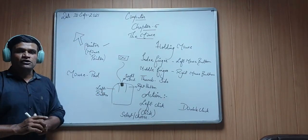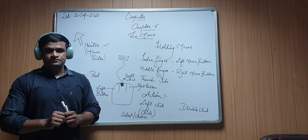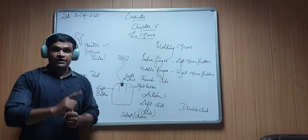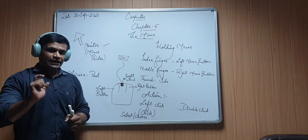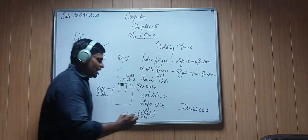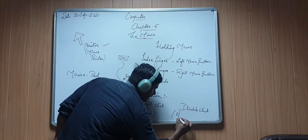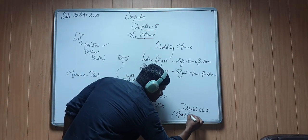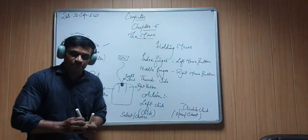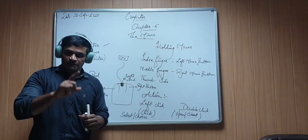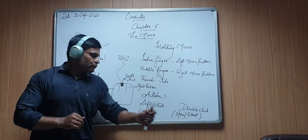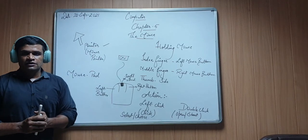When we press the left button of the mouse two times, it is known as double click. Generally, by double click we open or start a program. If we double click on a file or folder using the mouse, the file or folder will get opened or the program will get started.